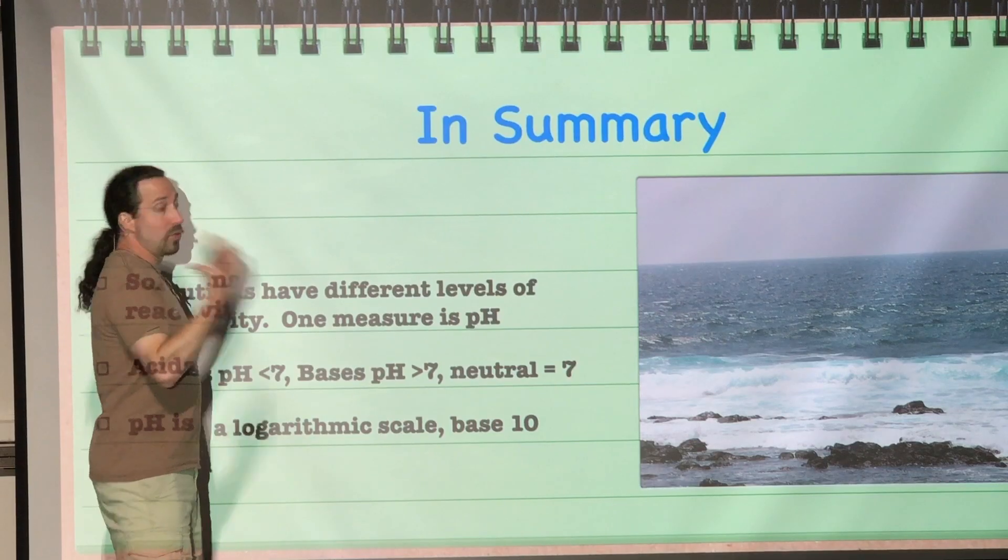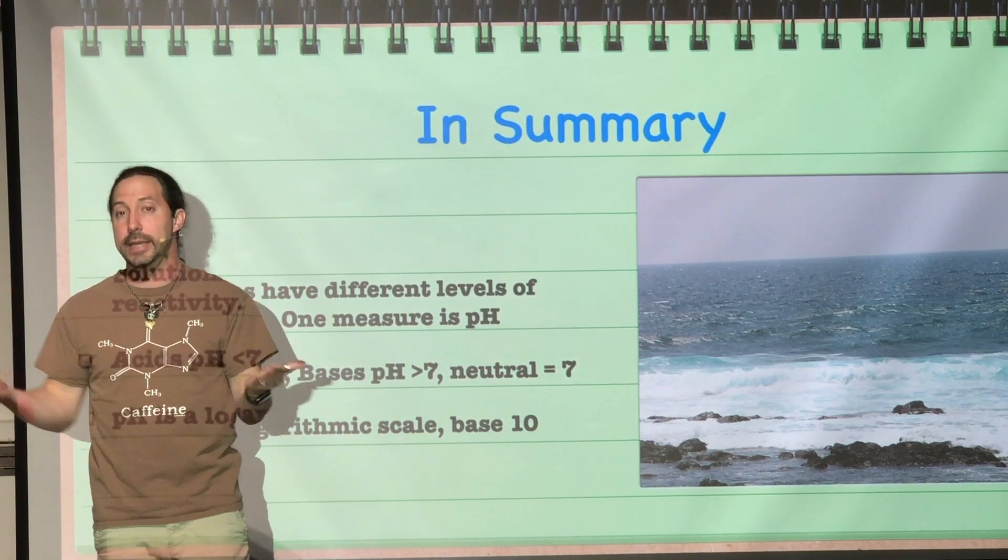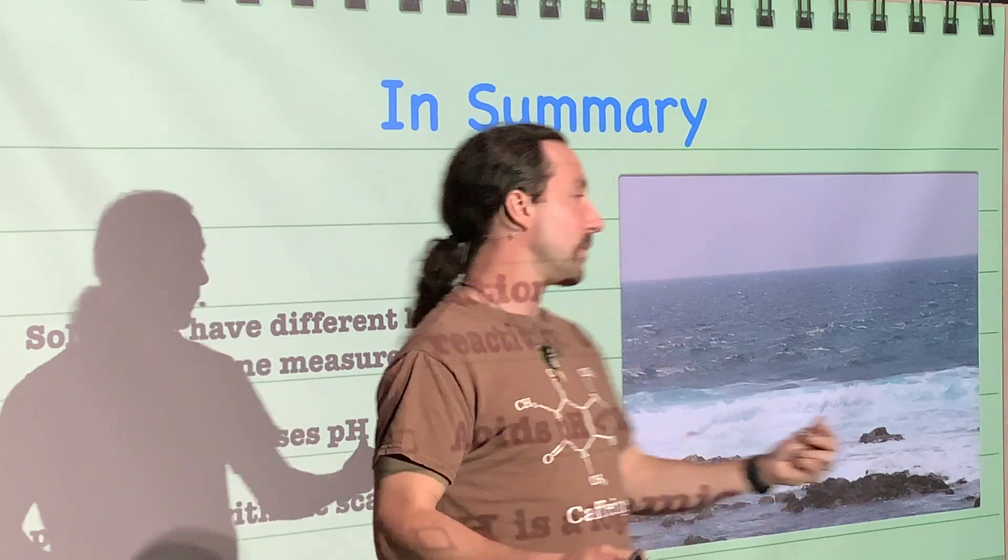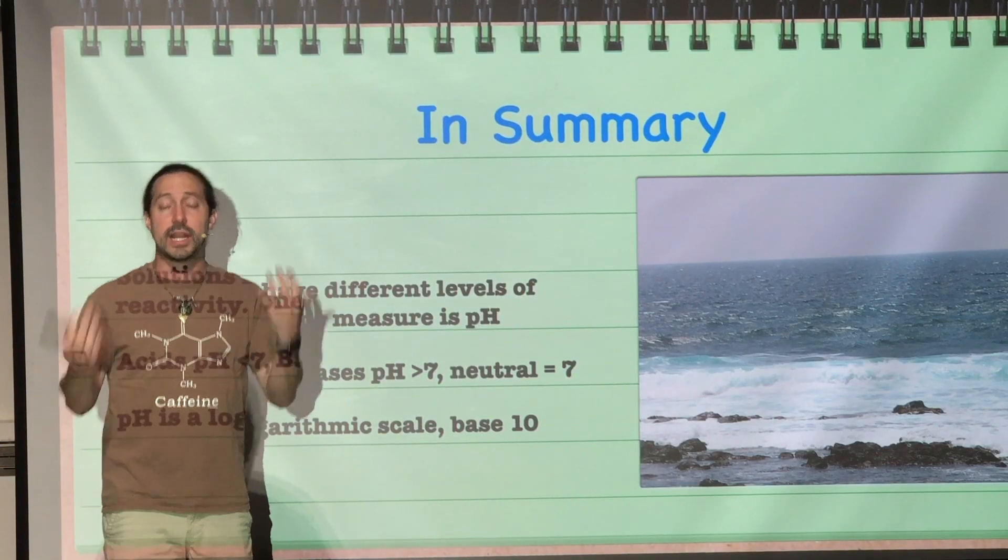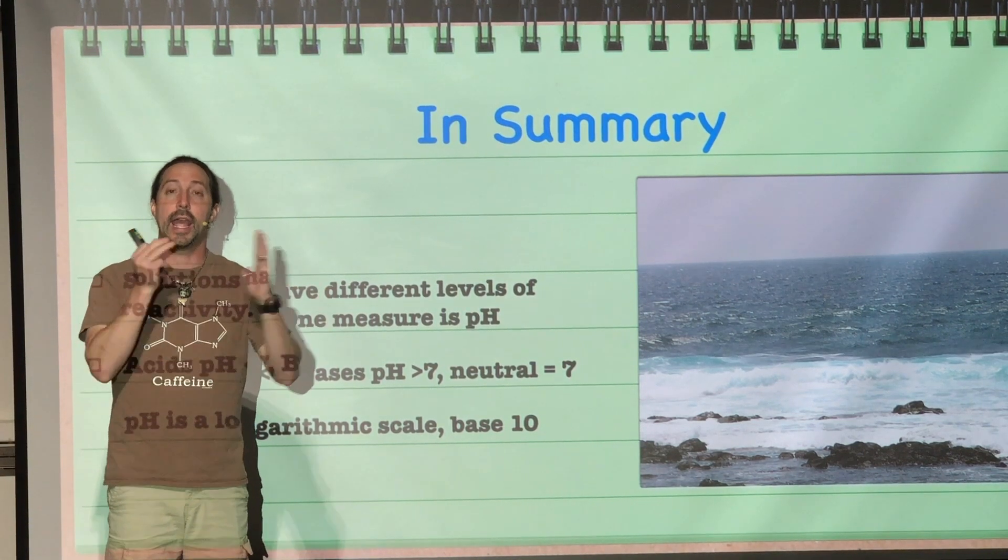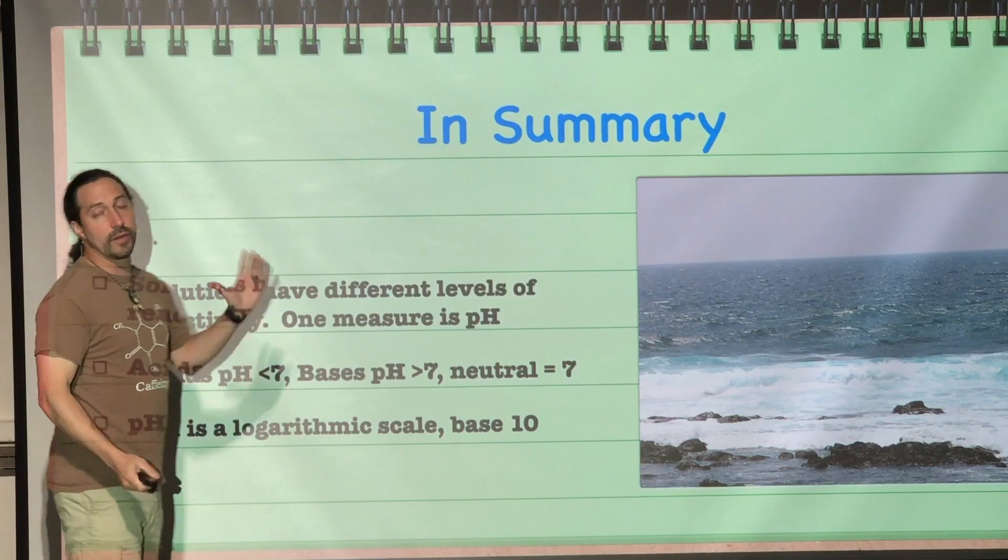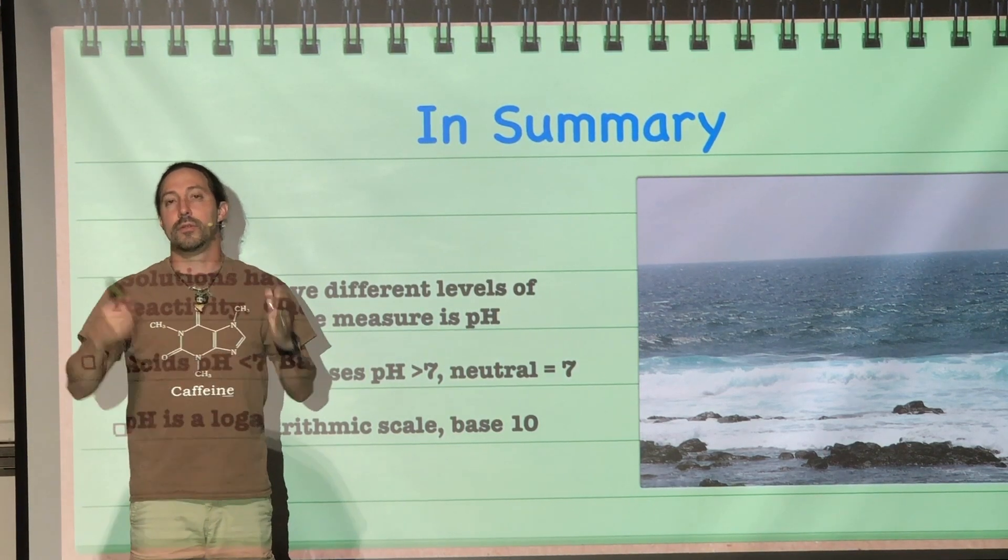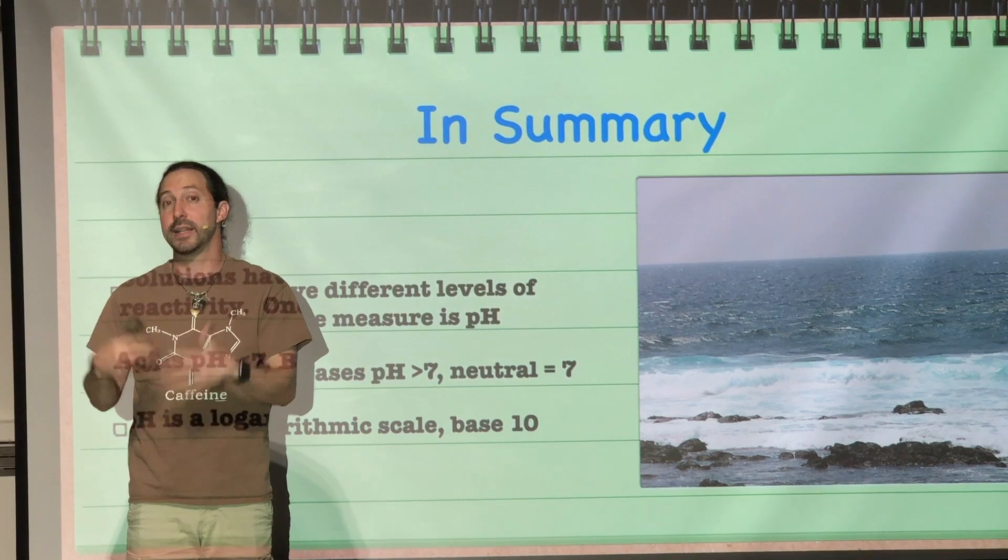In summary of all this, solutions have different ways that we can measure them. One of which is reactivity, and for that we can use pH. We can determine what the concentration of hydrogen ions is, and thus how reactive that specific solution will be. And how it will be reactive. And to identify these, we have made three different categories. Acids, bases, and neutrals. Acids having a pH that's less than 7. Bases having a pH that's greater than 7. And neutrals having a pH that is exactly 7. And the scale is a logarithmic scale, which means it's a base 10 system. So it's a multiple of 10 each step you go. pH of 3 is 10 times more basic than a pH of 2, and 100 times more basic than a pH of 1.